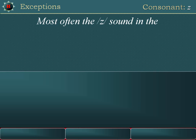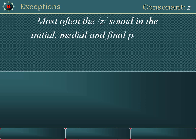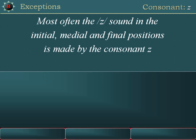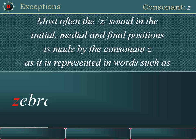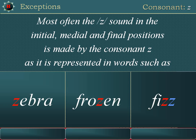Z has one sound anywhere in a word. Most often, the Z sound in the initial, medial, and final positions is made by the consonant Z, as it is represented in words such as zebra, frozen, and fizz.